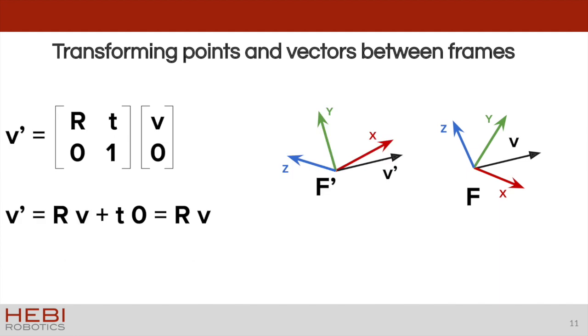Transforming free vectors, so directions, is similar, but since they represent a direction, their position isn't important. And so instead of adding a 1 to the bottom of the vector when we multiply them by that 4x4 transform, we add a 0 instead. This results in effectively rotating the vector by the rotation matrix and ignoring the translation component of the homogeneous transform.